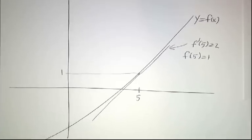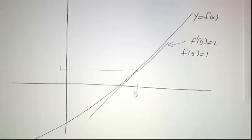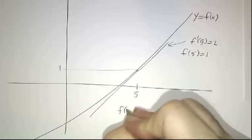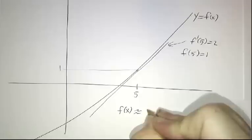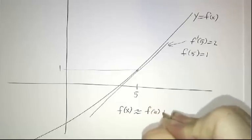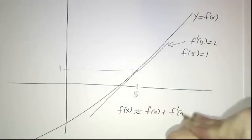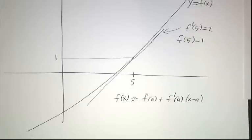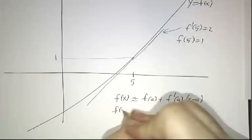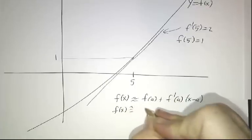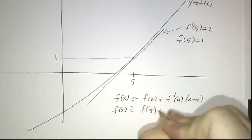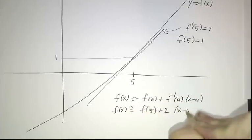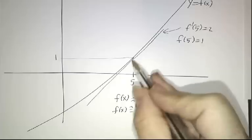Well, that's what we did with linearization. We said that if you wanted to know what f of x is, that's approximately f of a plus f prime of a times x minus a. So in this case, f of x is approximately f of 5 plus twice x minus 5. That's the equation of the tangent line.